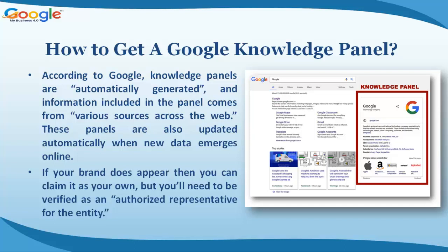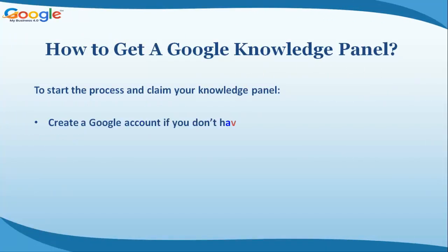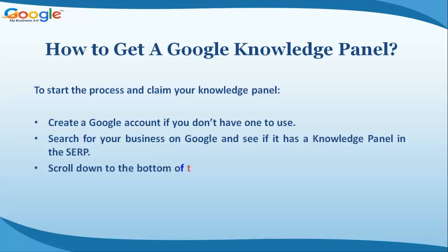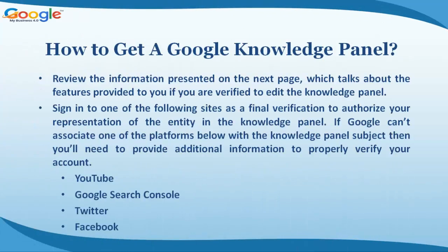If your brand does appear, you can claim it as your own, but you'll need to be verified as an authorized representative for the entity. To start the process of claiming your knowledge panel: create a Google account if you don't have one, search for your business on Google, and see if it has a knowledge panel in the SERP. Scroll down to the bottom of the panel and click the button labeled 'Claim this knowledge panel.'